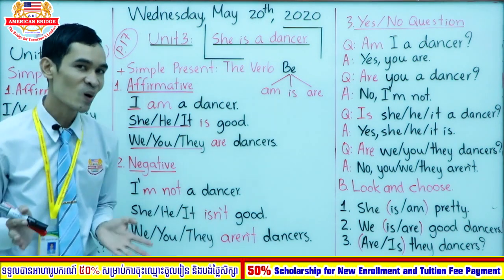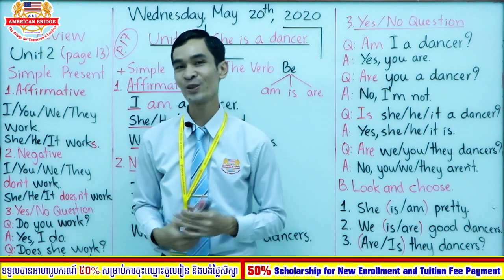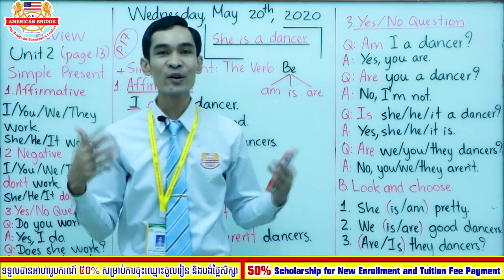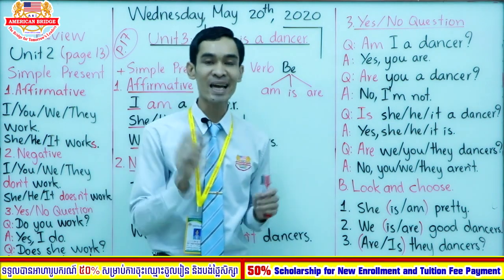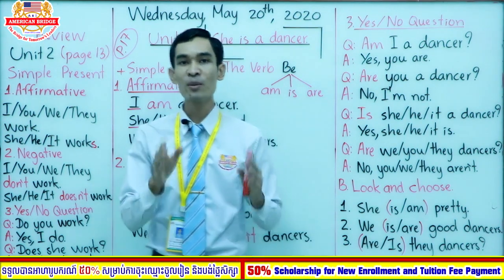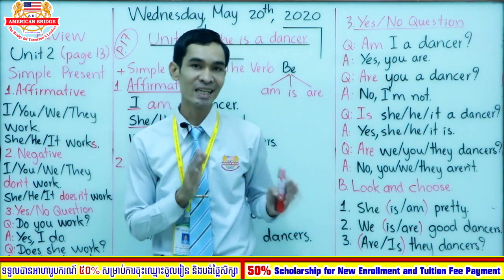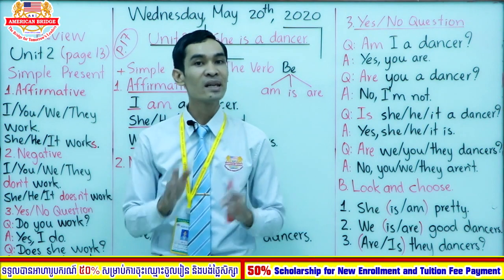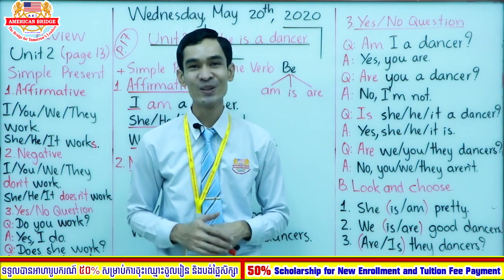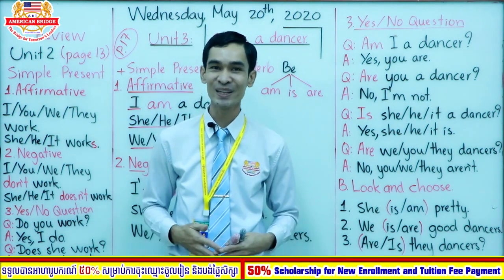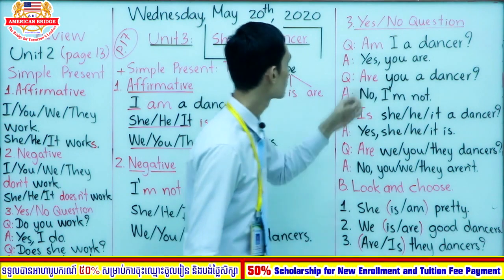Now let's go on to yes/no questions. Before that, let me ask: how do you form the negative? Very good — you just add 'not' after the verb 'be'. For example: 'I am' becomes 'I am not'; 'She is' becomes 'She is not'; 'They are' becomes 'They are not.' You should know this already since you've learned it from level two.